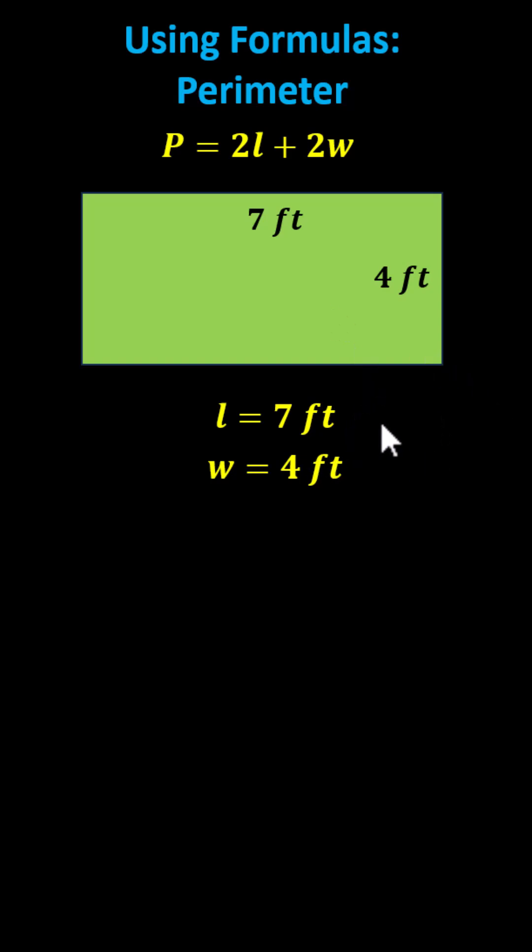Now we substitute 7 feet for l and 4 feet for w into the formula and evaluate the right side. Normally when performing the substitution, we leave the units off, which indicates the perimeter p is equal to 2 times 7 plus 2 times 4.